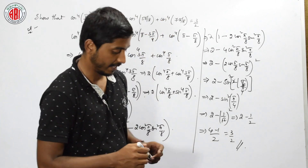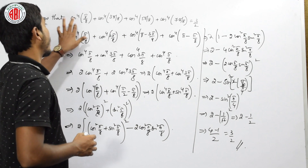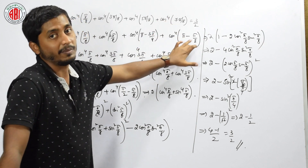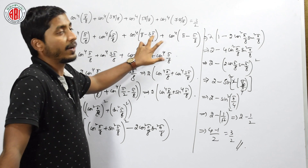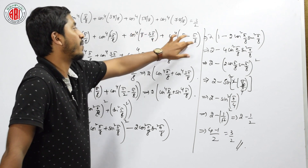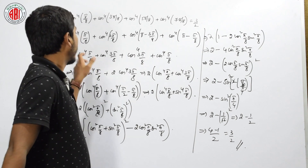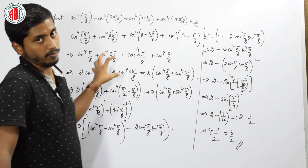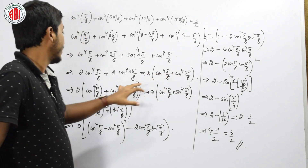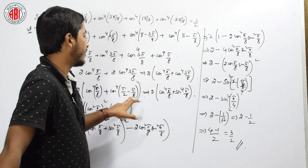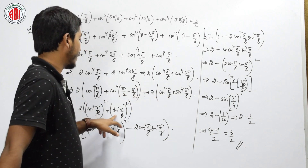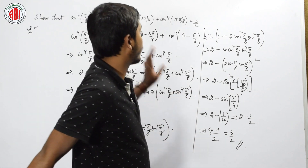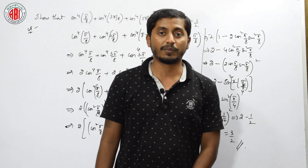Is it clear? This is one of the important questions for 4 marks. Let me recap: we had to show cos⁴(π/8) + cos⁴(3π/8) + cos⁴(5π/8) + cos⁴(7π/8) = 3/2. I converted the last two: 7π/8 as π−π/8 and 5π/8 as π−3π/8. Since cos(π−θ) = −cos(θ), but raised to power 4 it is positive. I took 2 as common, then wrote 3π/8 as π/2−π/8, applied the a²+b² identity, and simplified to get 3/2.